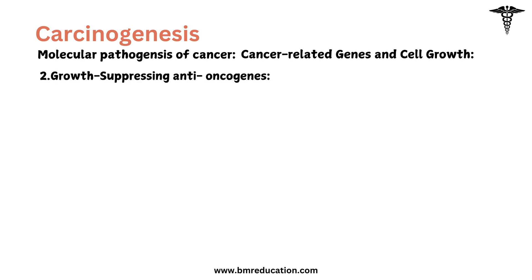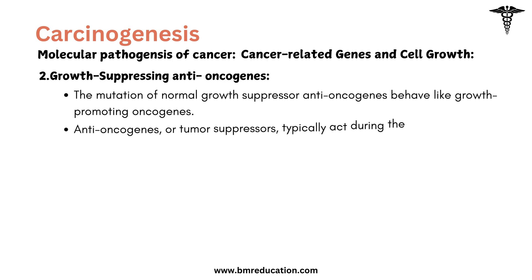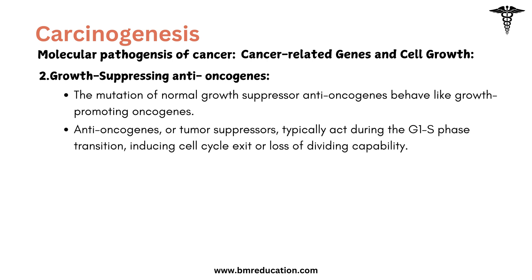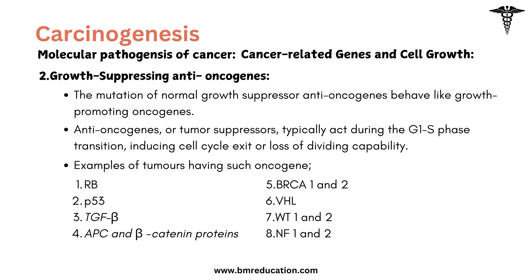The next cancer-related gene is growth-suppressing anti-oncogenes, or tumor-suppressing anti-oncogenes. Mutation of normal growth-suppressor anti-oncogenes causes them to behave like growth-promoting oncogenes. Anti-oncogenes or tumor suppressors typically act during the G1 to S phase transition, inducing cell cycle exit or loss of dividing capability.